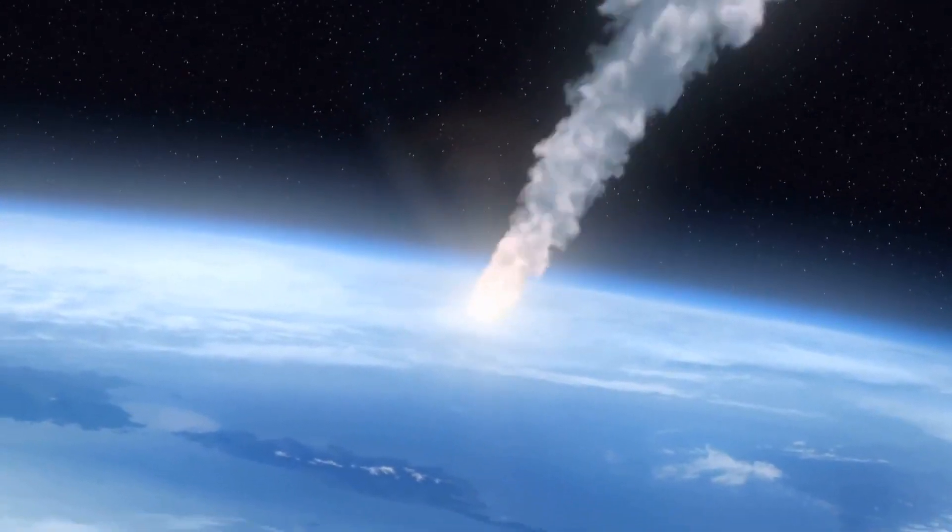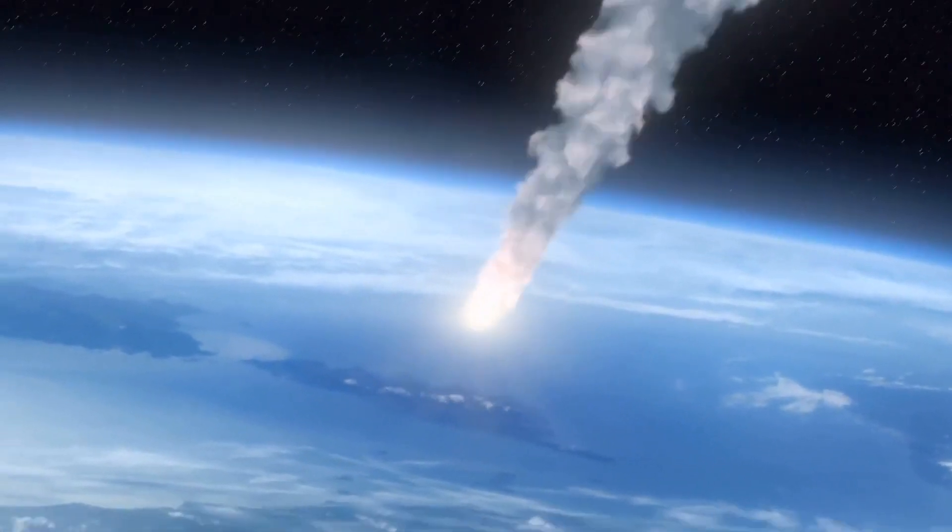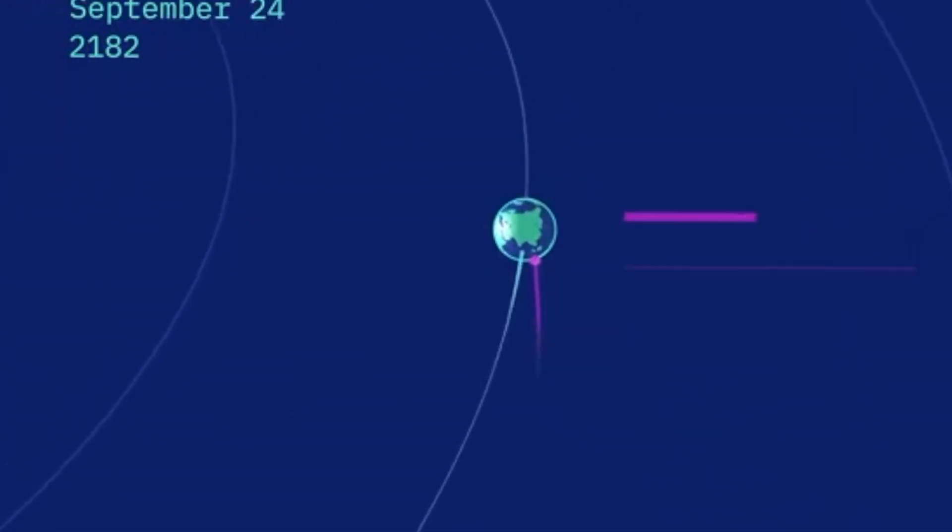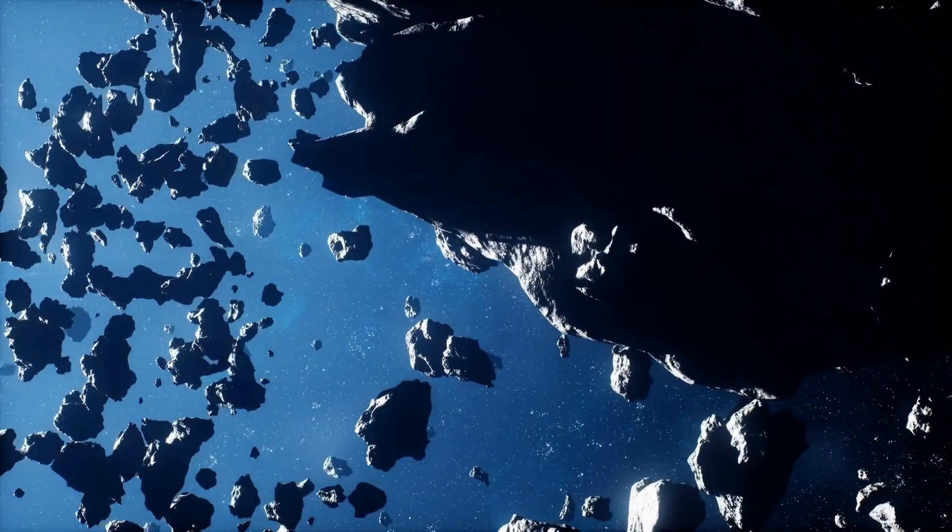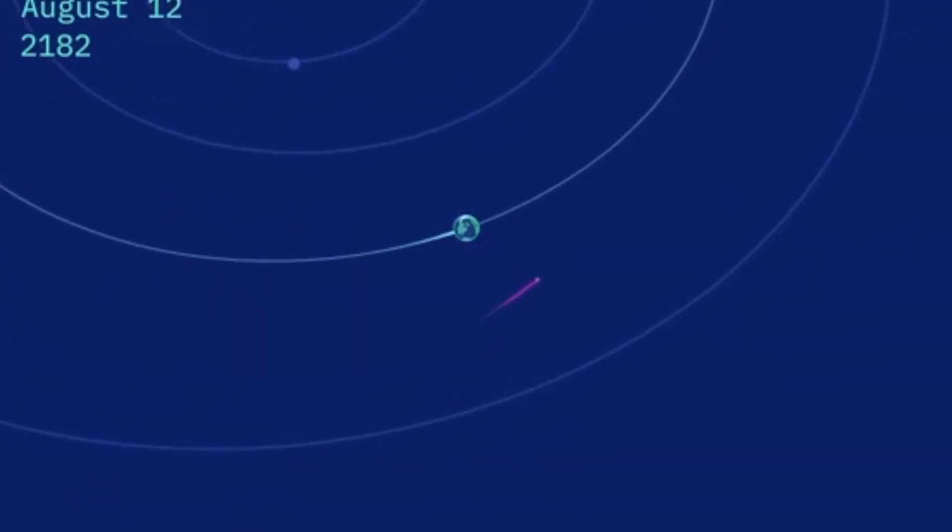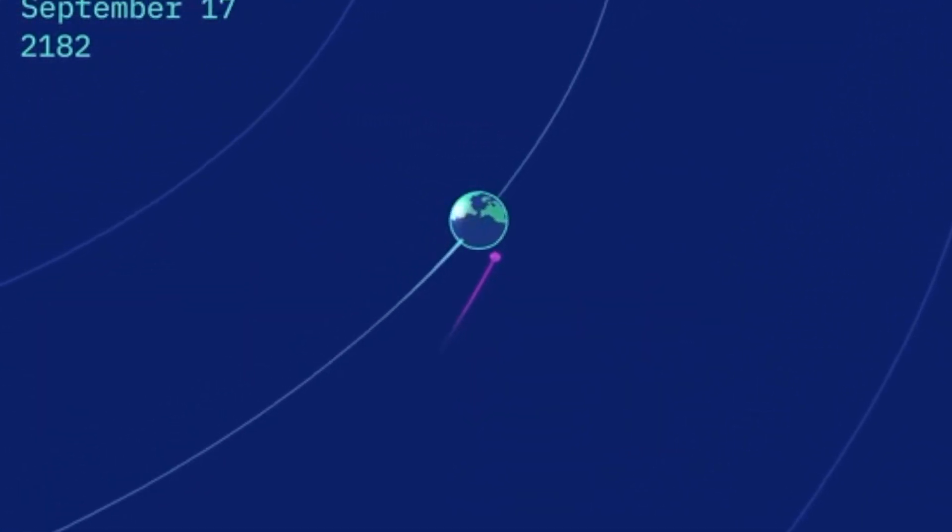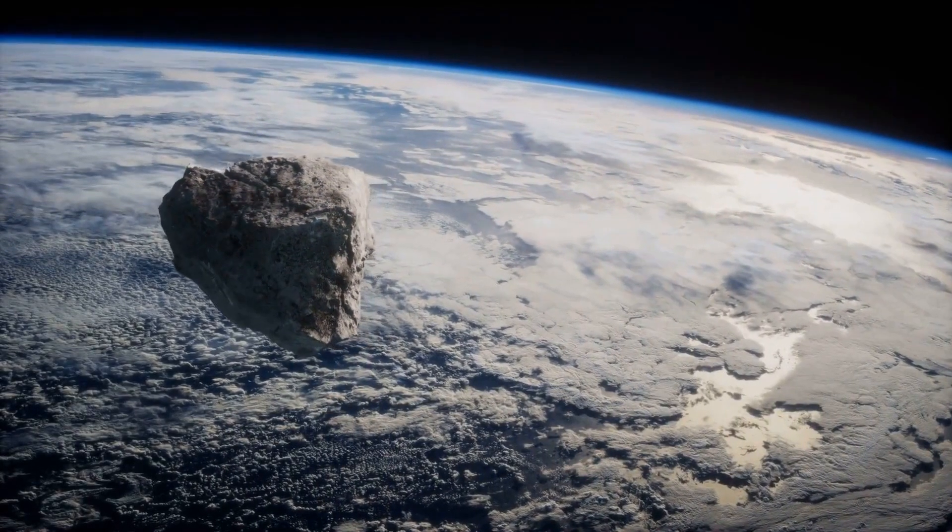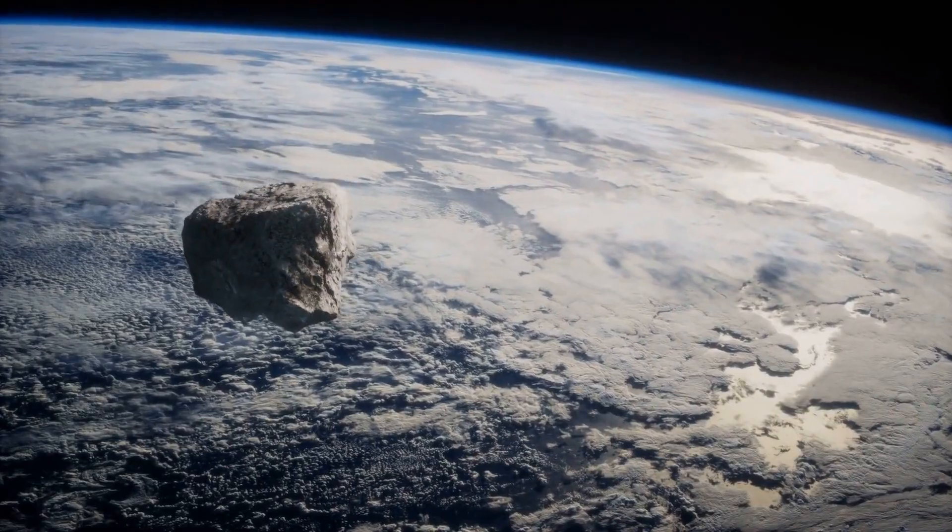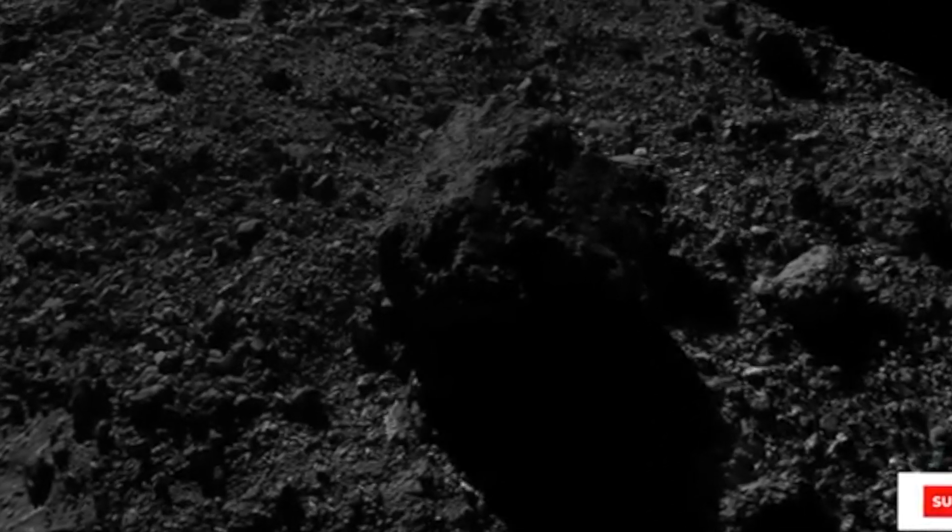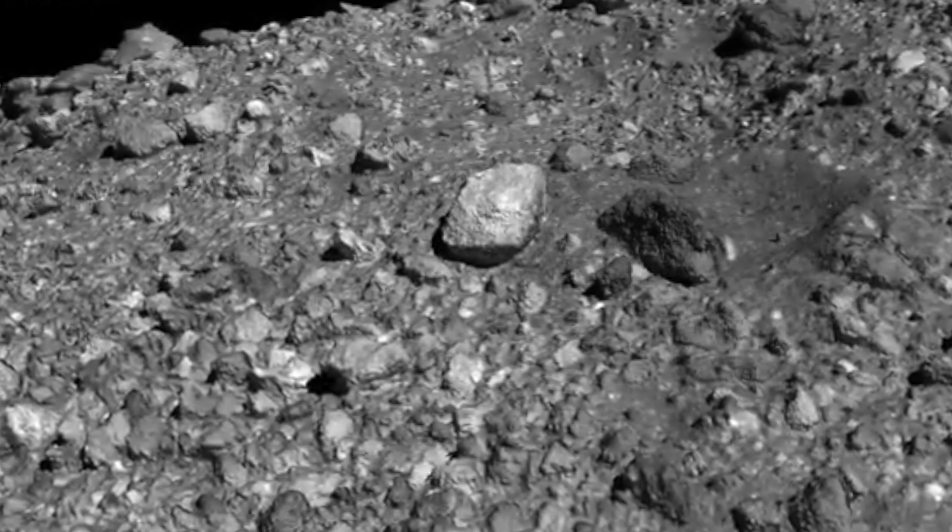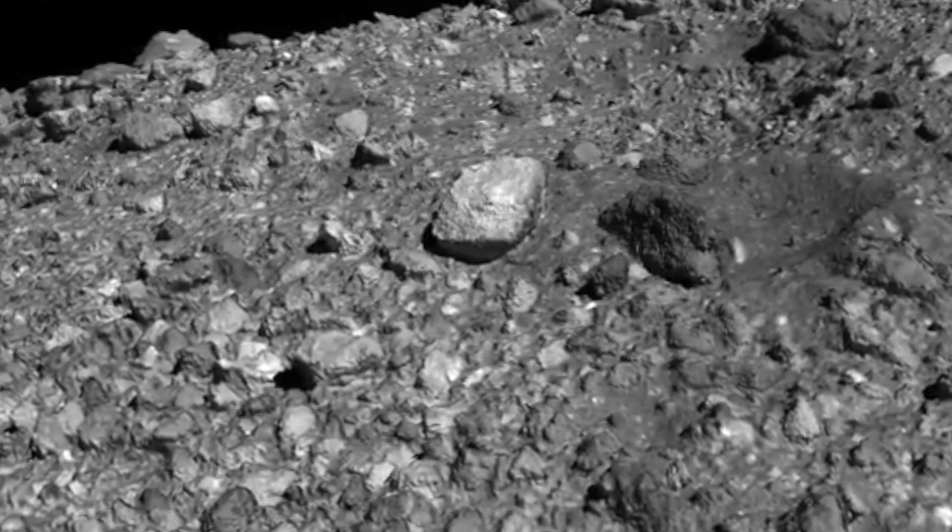Lastly, the mission aimed to assess the potential impact of Bennu on Earth. Bennu is classified as a potentially hazardous asteroid, and on September 25, 2135, it will make a close flyby of our planet. The gravitational interactions between Earth and Bennu during this event could affect the asteroid's future trajectory. The Yarkovsky effect, caused by sunlight striking a rotating asteroid, can subtly alter its path over time. While the chances of a catastrophic impact are low, understanding these dynamics is crucial.